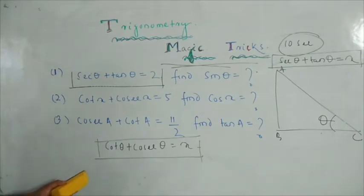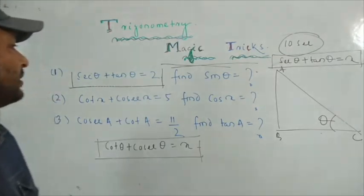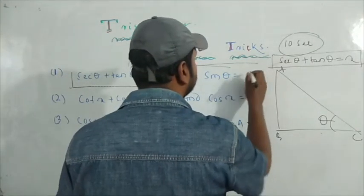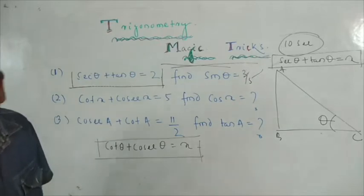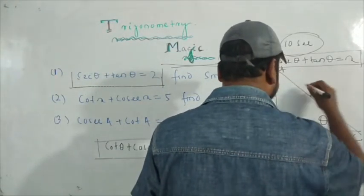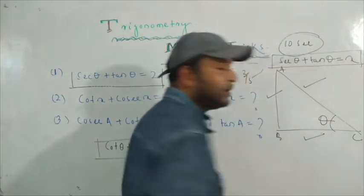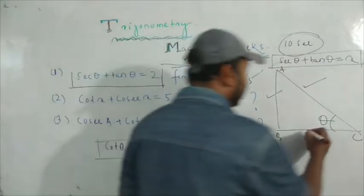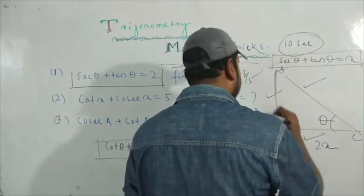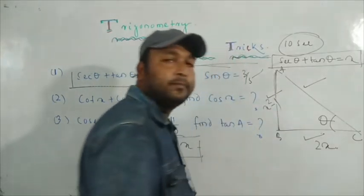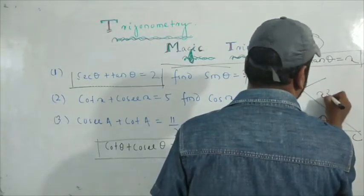For the first question, for the second question: cos θ + cosine θ is equal to x. You can solve this in 10 seconds. The perpendicular side of the triangle is 2x. The hypotenuse is x² + 1. The base is x² − 1. This is the triangle setup for the trick.